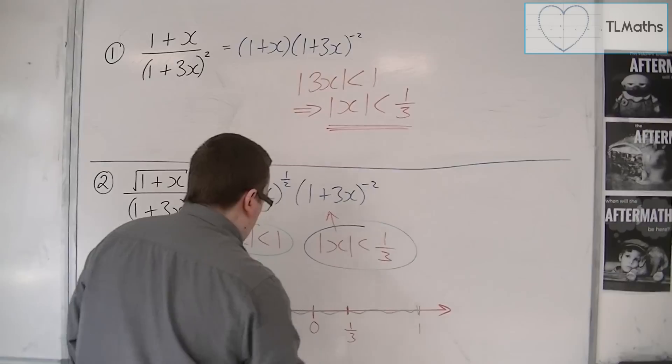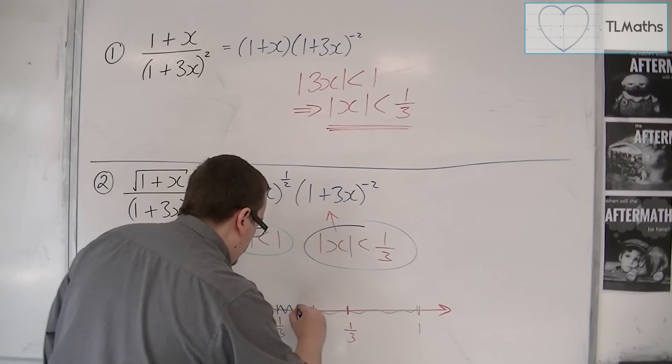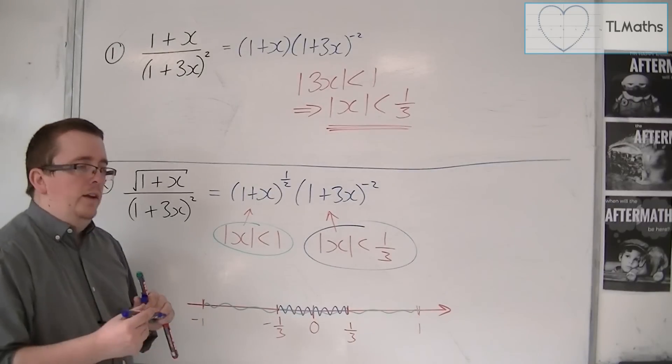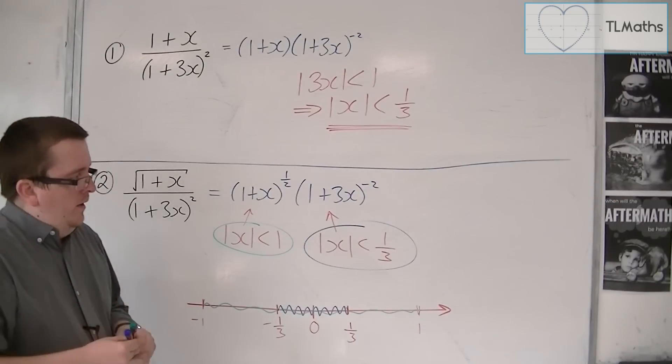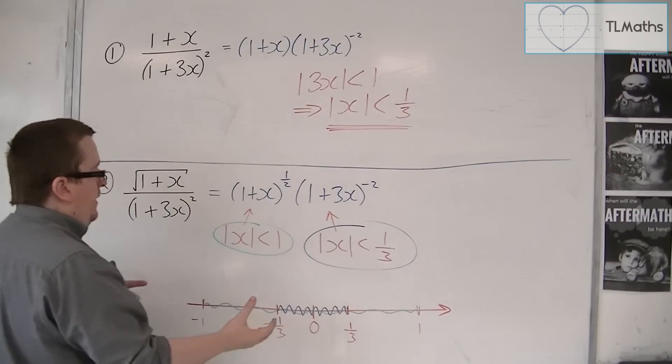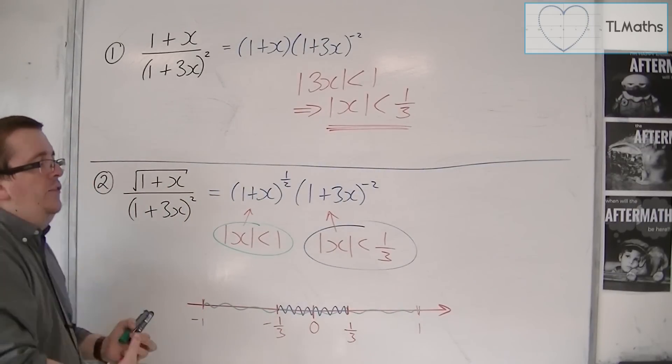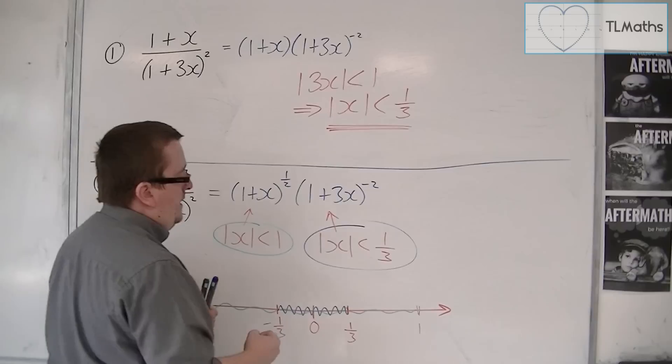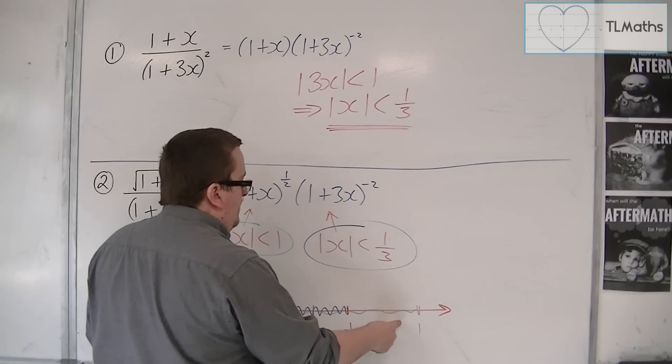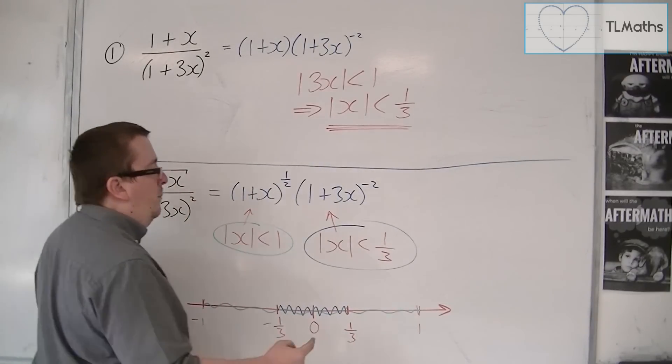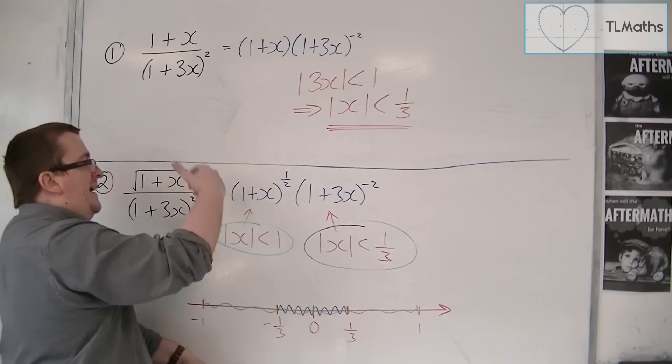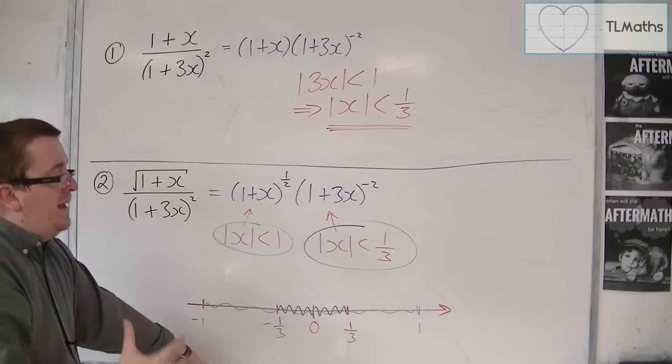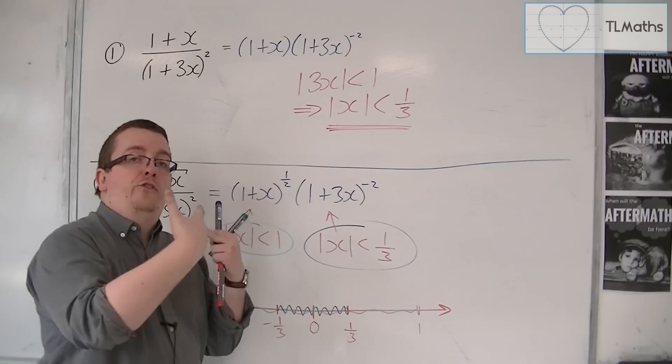Now, this has got to work for any value of x that I plug in. There's no point me putting in a value like x is 0.8, because even though 0.8 will work for this one, it doesn't work for that one. So it's got to be a value for which it works for both.